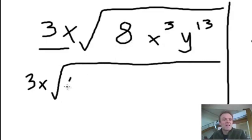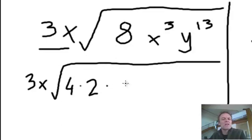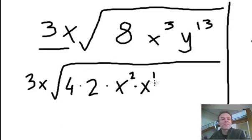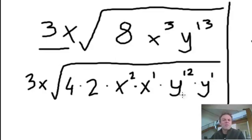So 8 — remember, 8 is 4 times 2. I'll be able to square root the 4. x³: I can do an x² with an x¹ — that's x³ — and I'll be able to square root the x². I've also got a y¹³. A y¹³ I can call a y¹² with a y¹, and I'll be able to square root the y¹².